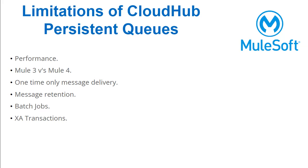Regarding batch jobs: Mule Batch internally makes use of queues. When CloudHub Persistent Queues is enabled for an application using batch processors, severe performance degradation will occur. Batch also has its own set of limitations when using CloudHub Persistent Queues. Message reliability is not guaranteed in a batch process — message loss can still occur in case of an application restart, whether intentional or unintentional. This limitation means there is no benefit to having CloudHub Persistent Queues enabled for a batch application, so the recommendation is to not enable it if the application has a batch processor.